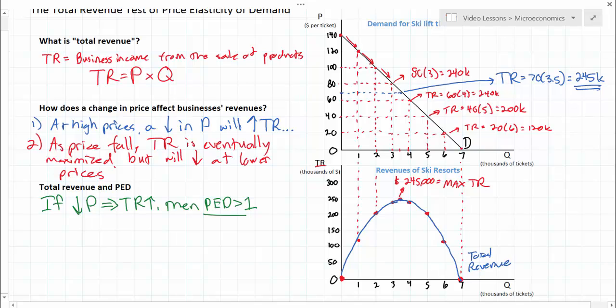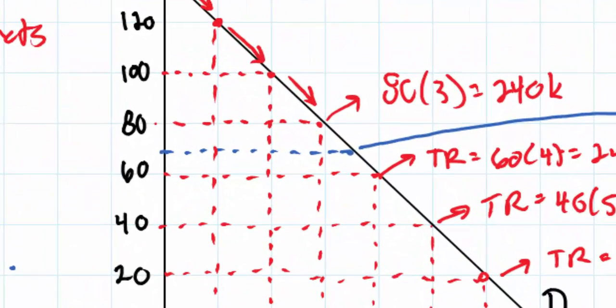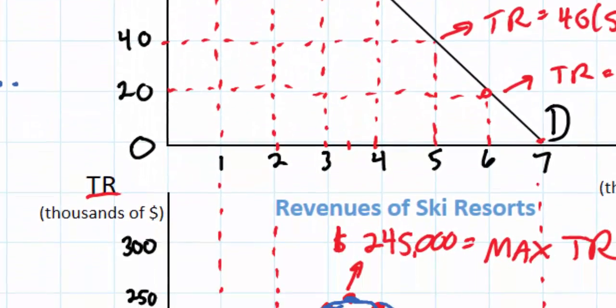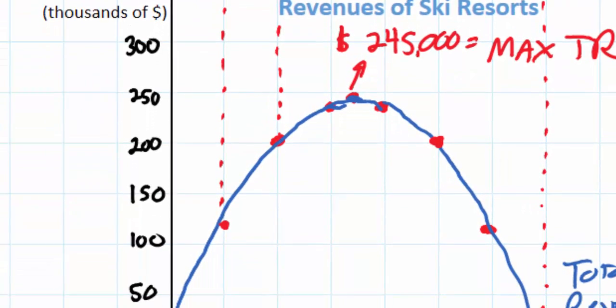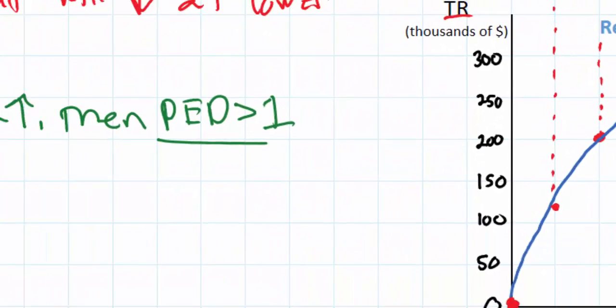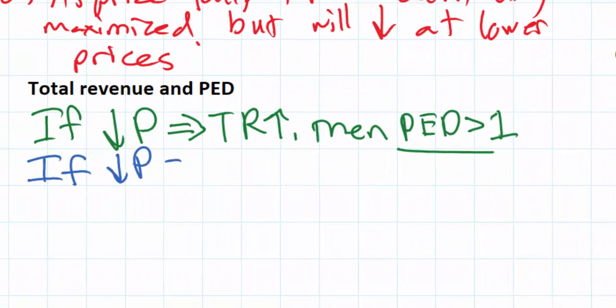But demand is not always elastic, even along a straight line constant slope demand curve. As we can see, below $70 in this case, decreases in price lead to a decrease in total revenue. What's happening here? If a decrease in price leads to a decrease in total revenue, then the demand is inelastic. We can say PED is less than 1.